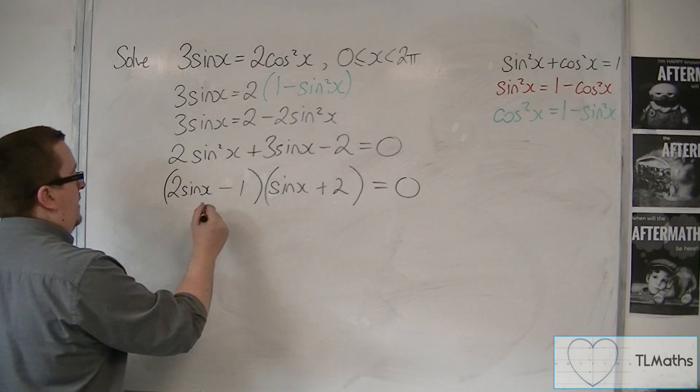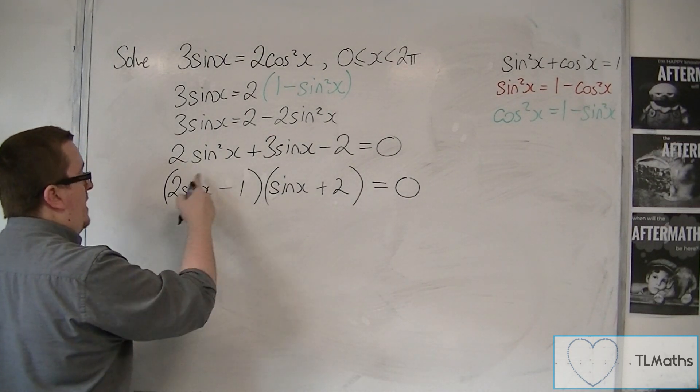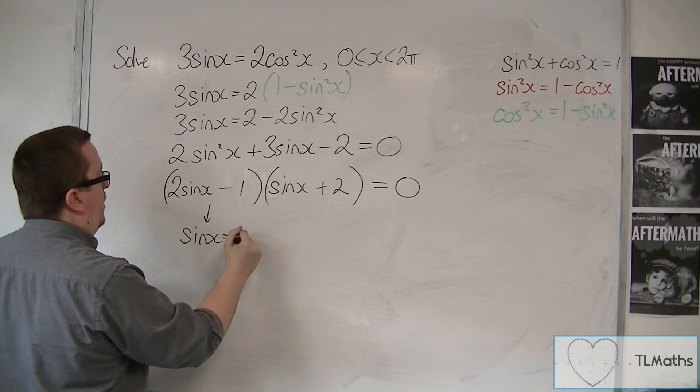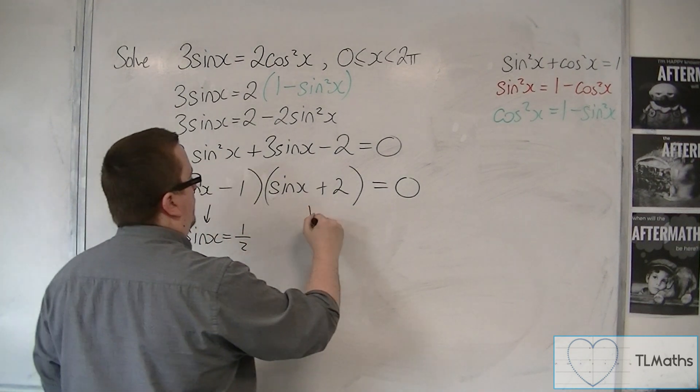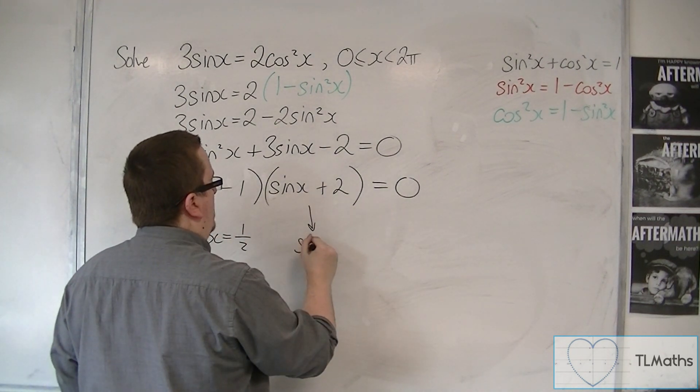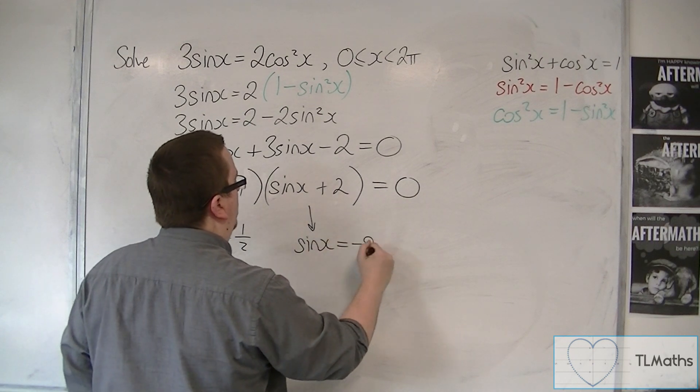So either this bracket is 0, in which case sine x is 1 half, or this bracket is 0, in which case sine x is minus 2.